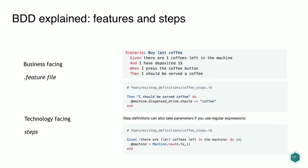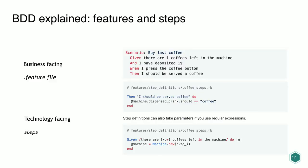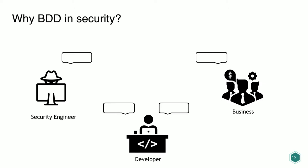Here's an example of a BDD test. It's divided into a feature file — the business-facing side — written in plain English. In this case: if there is one coffee in the machine and I deposit one dollar, then I press the coffee button, I should be served a coffee. The technology-facing side is the code that translates this — in this case Ruby — where the 'given' function initializes our machine with one element.